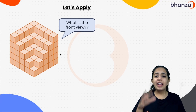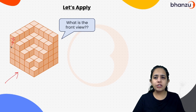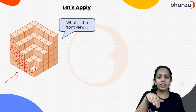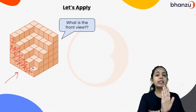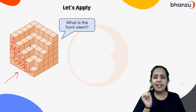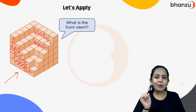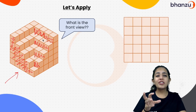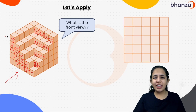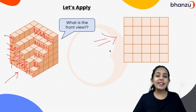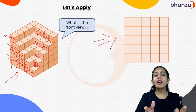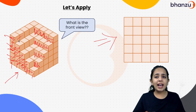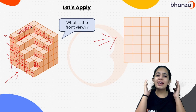Now let's apply your understanding to the question I asked at the beginning. If you look from the front, you're going to see all of this portion — the sitting part is hidden because you're looking only from the front. You'll see this portion, this portion, and this portion as well — everything coming in the front. That is a cube arrangement with five rows and five columns. Only the front part is visible — no side part, no top part.